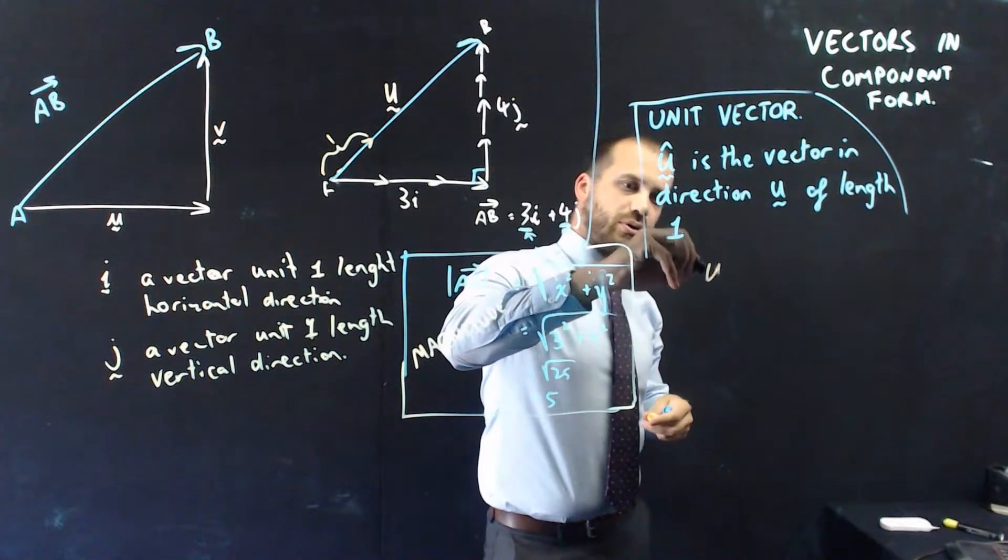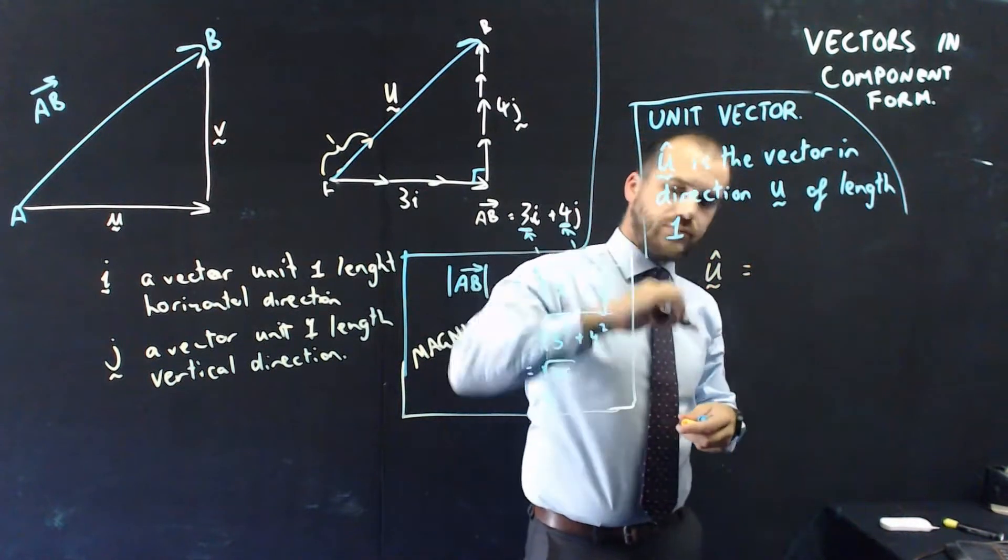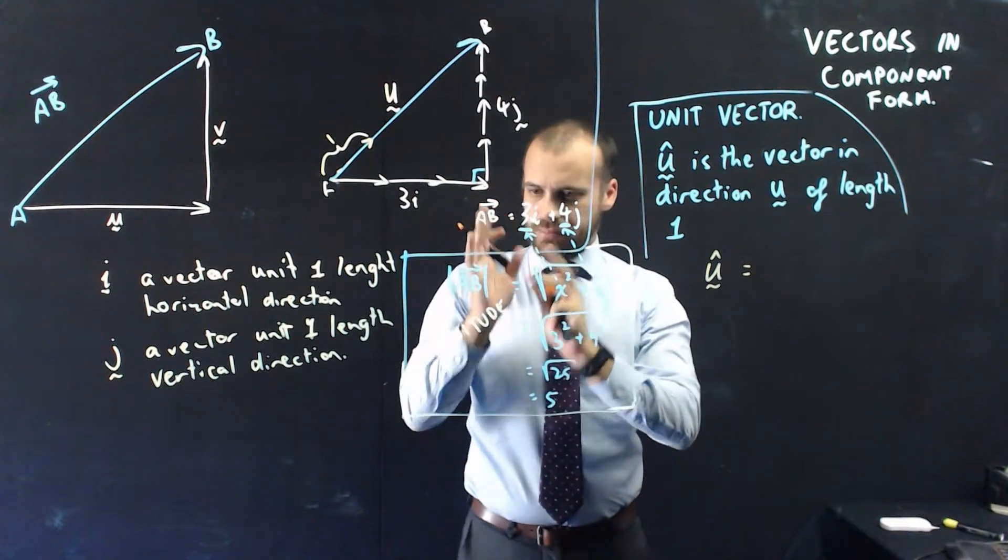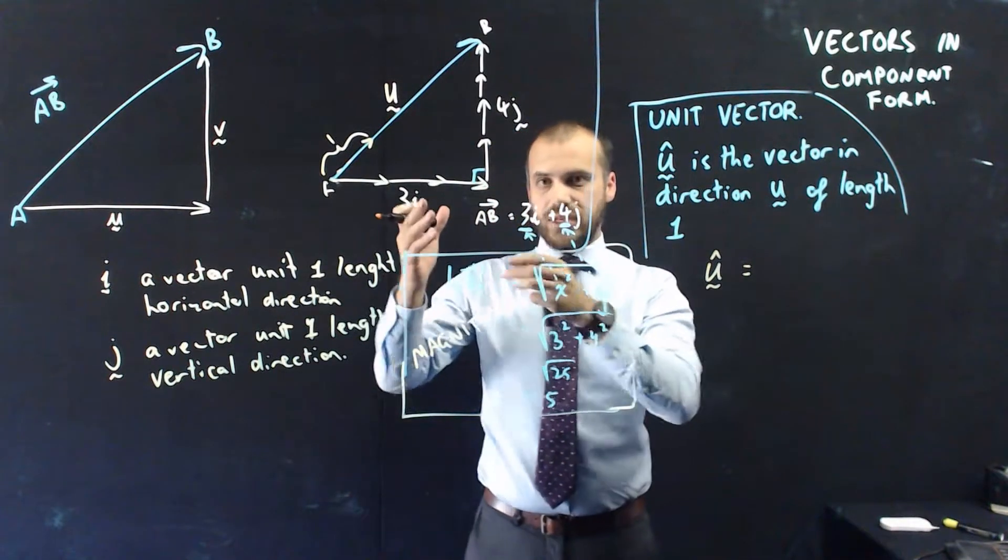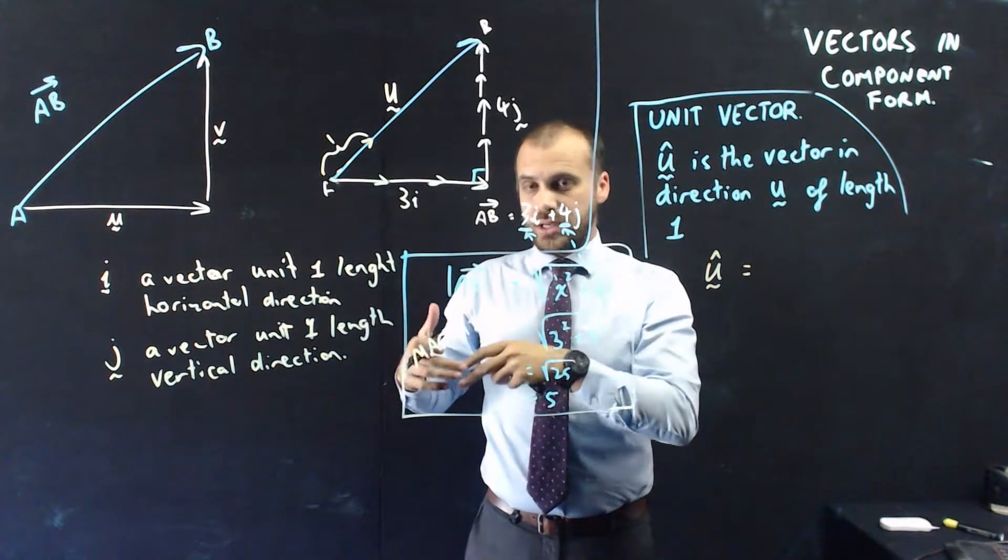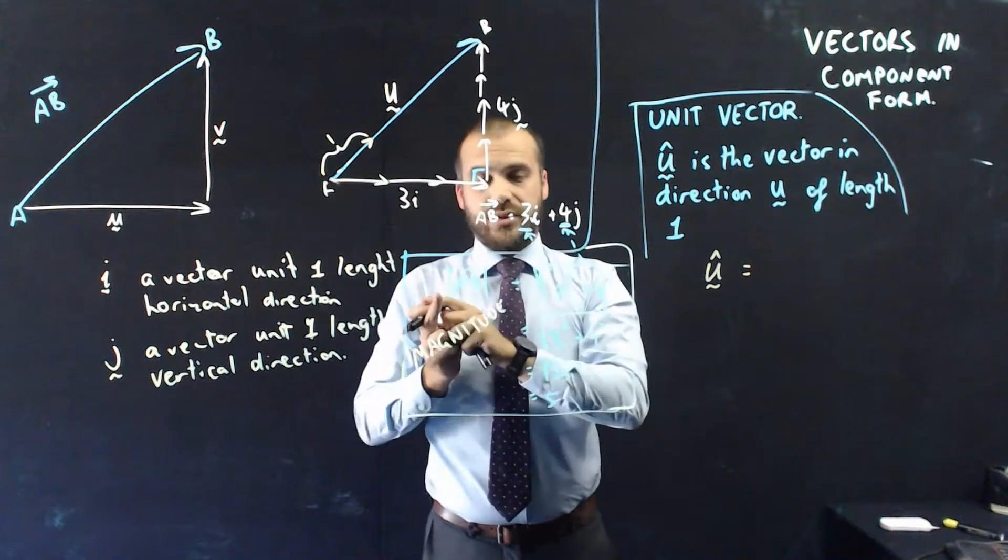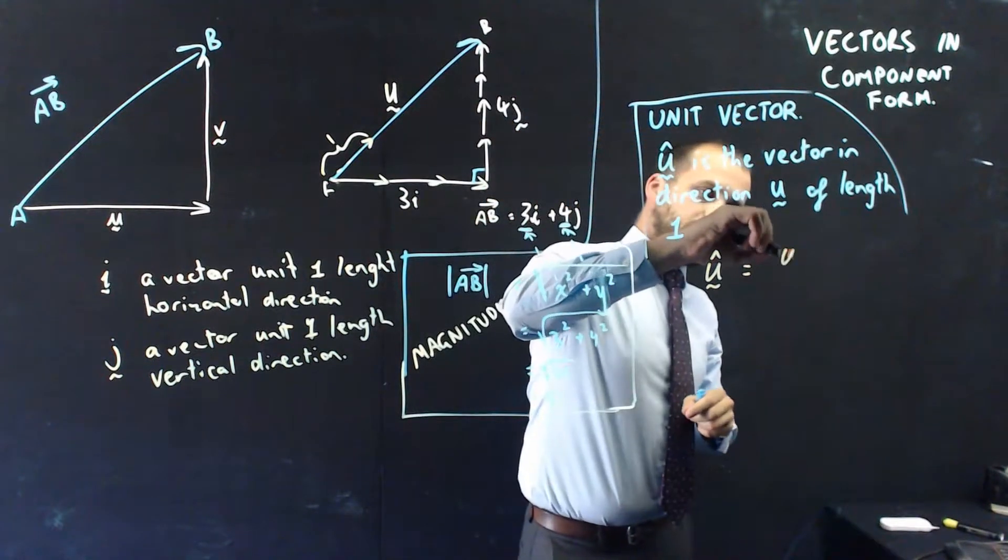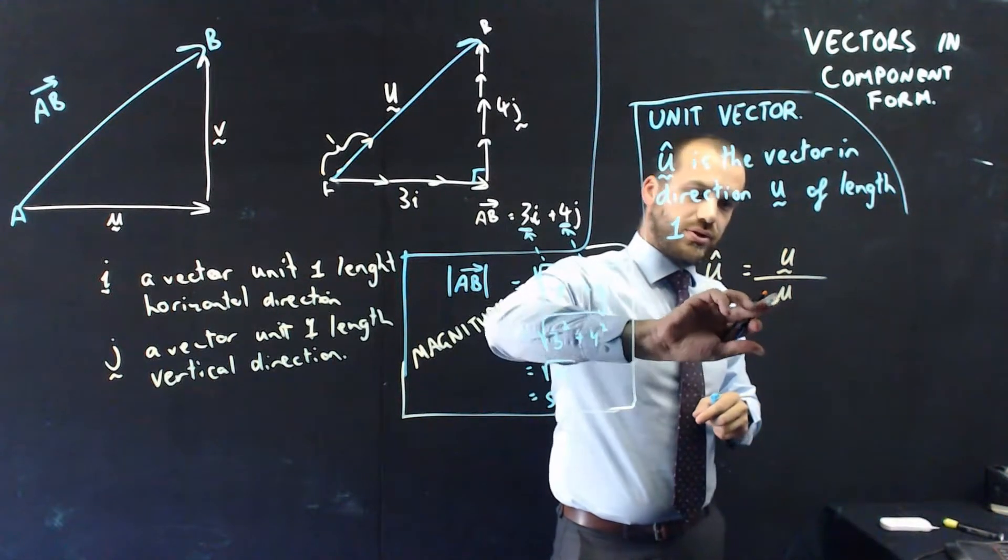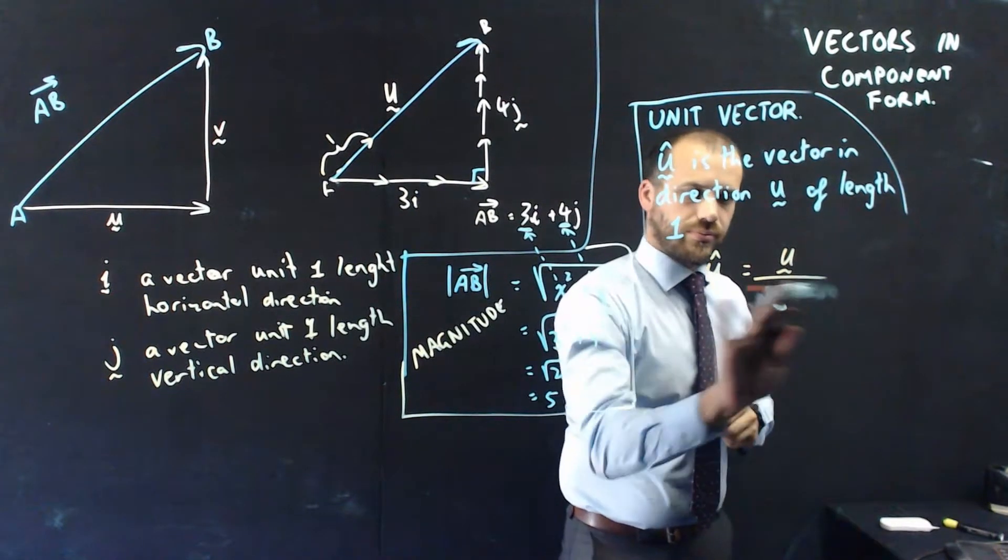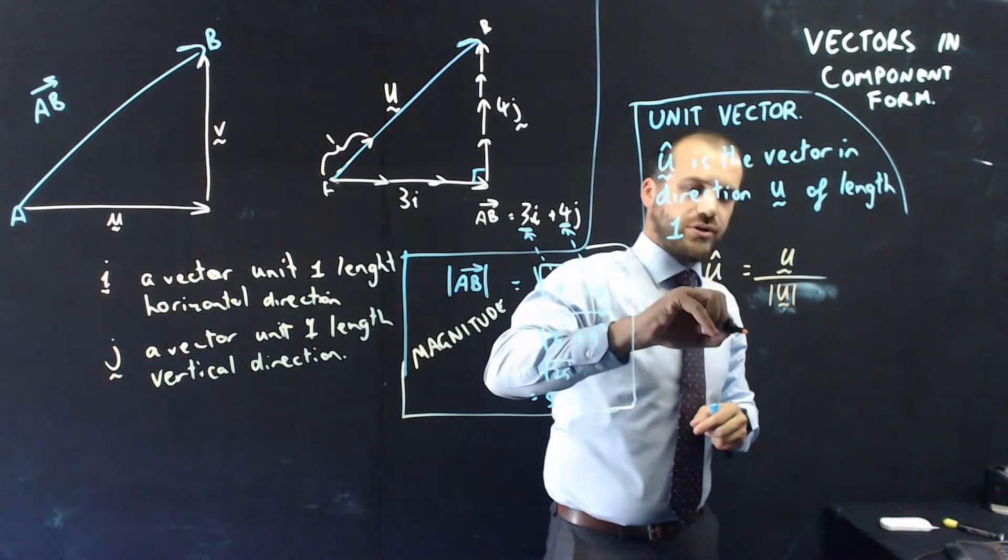All right. So a formula for it. If we want to find the unit vector, we need to know the magnitude, and we need to know the vector itself. So if we take the vector and then divide it by its magnitude, we'll essentially be scaling it down. So it's going to be equal to the vector divided by the magnitude of the vector.